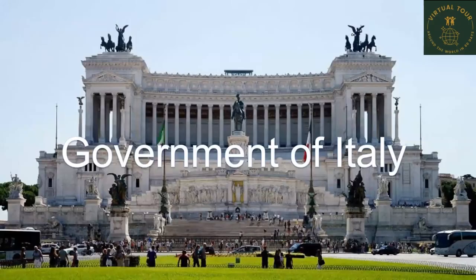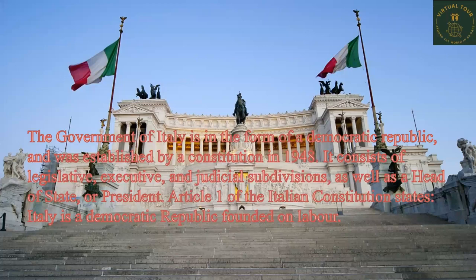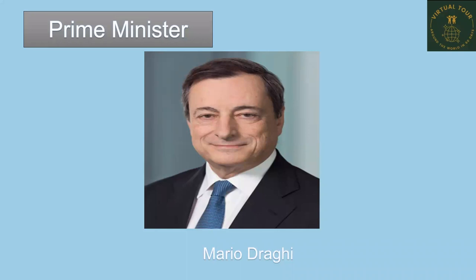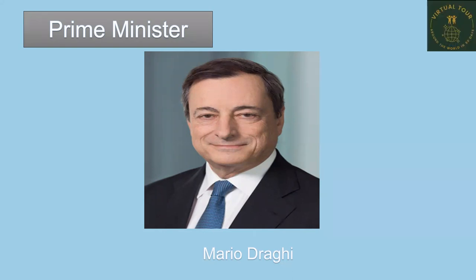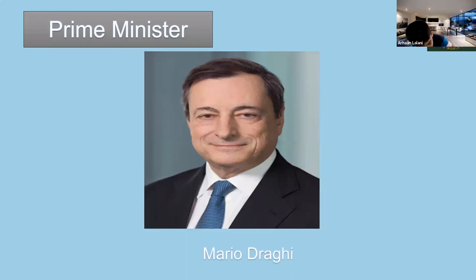Now I'll tell you about the government. The Prime Minister of Italy is Mario Draghi — here you can see his photo. His name is Mario Draghi. Someone said he looks like a cartoon character!